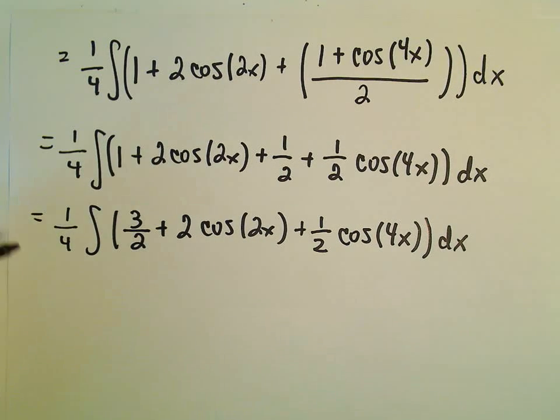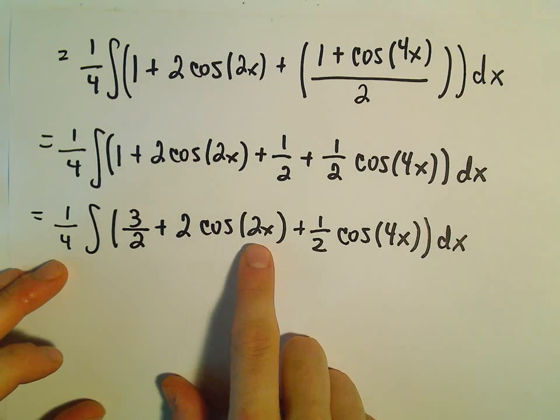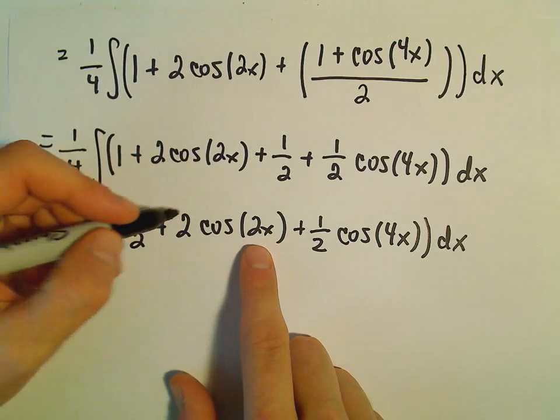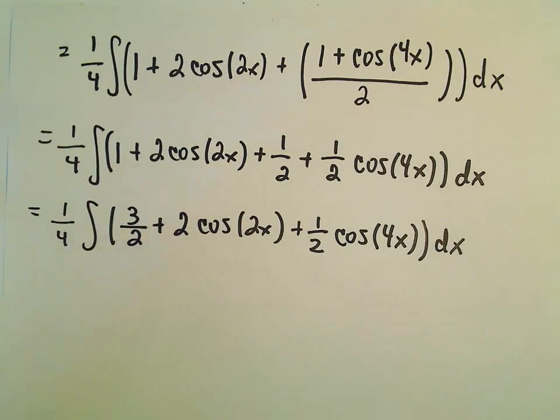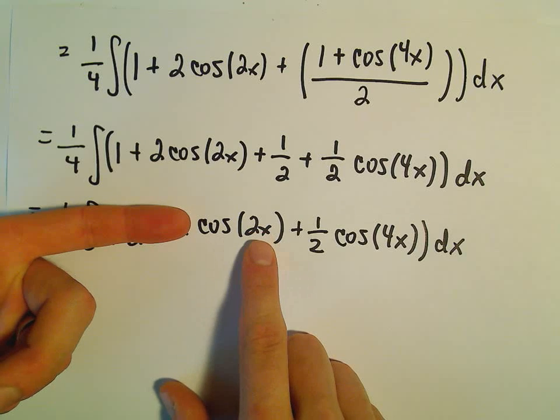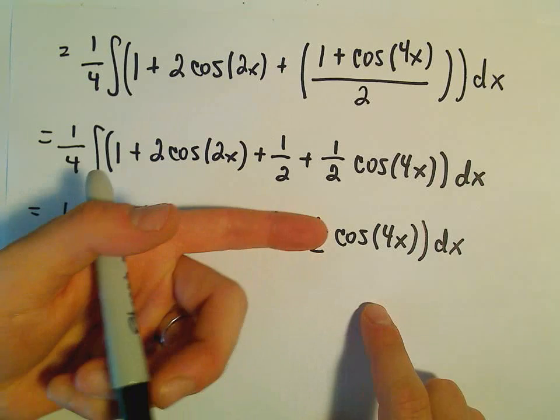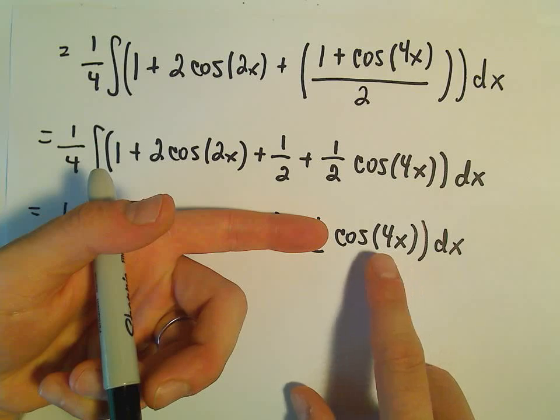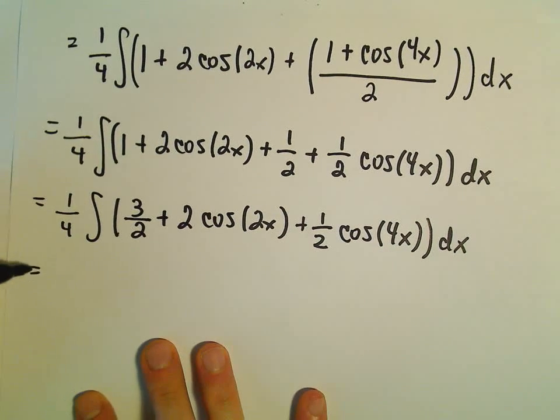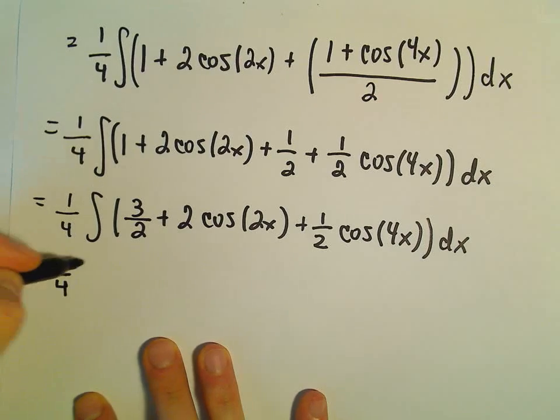So to integrate these, technically to integrate cosine of 2x, we would do a u substitution. To do cosine of 2x, we would do a u substitution. We would let u equals 2x. To integrate the cosine of 4x, again, we would do a u sub and let u equal 4x. But we've kind of seen the shortcut for these in a different example.